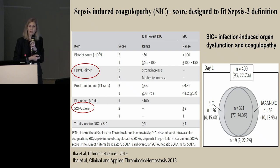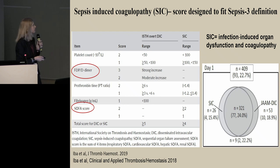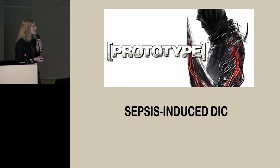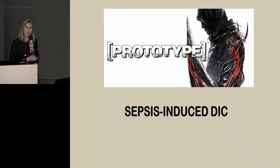The SIC score is very easy to perform in every patient, and it was demonstrated to have similar sensitivity to the JAAM DIC scoring system, identifying almost the same patients. In almost all septic patients, we have some hemostatic abnormality — either small modifications in coagulation tests, or in some patients we see bleeding, thrombosis, and DIC.